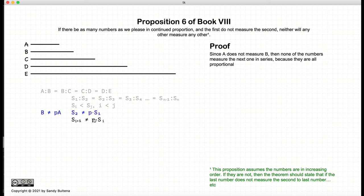So we know that if S1 does not measure S2, then SI does not measure SI plus 1. If you think of it in terms of A and B, since A to B equals B to C, if A doesn't measure B, then B doesn't measure C, because otherwise the ratios wouldn't be equal. So we've just shown that A does not measure B, B does not measure C, C does not measure D, and D does not measure E.